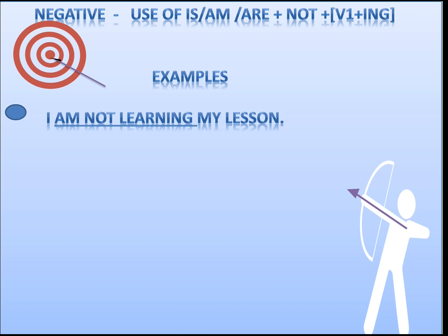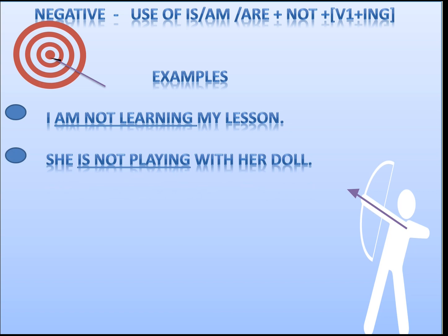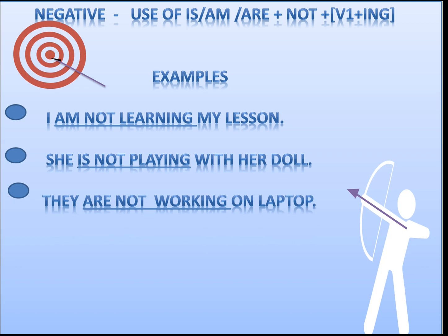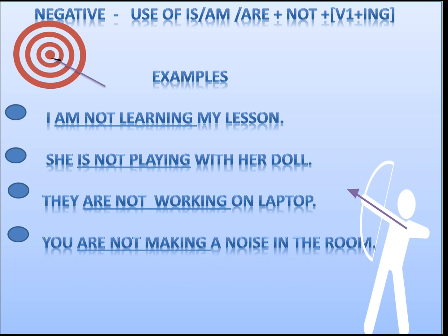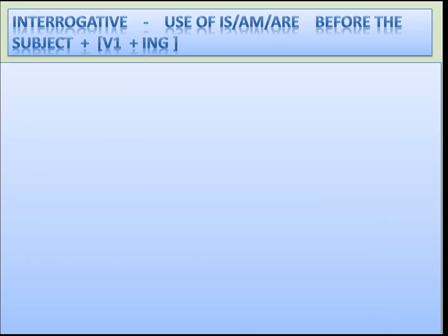For negative sentences, we use is/am/are as already discussed, plus 'not', followed by the first form of the verb plus -ing. Examples: 'I am not learning my lesson.' The structure is: subject, then helping verb, then 'not', then first form of verb plus -ing, then object. More examples: 'She is not playing with her doll.' 'They are not working on laptop.' 'You are not making a noise in the room.'